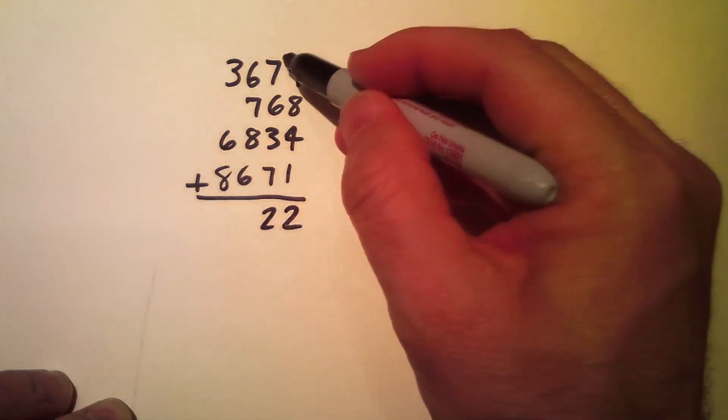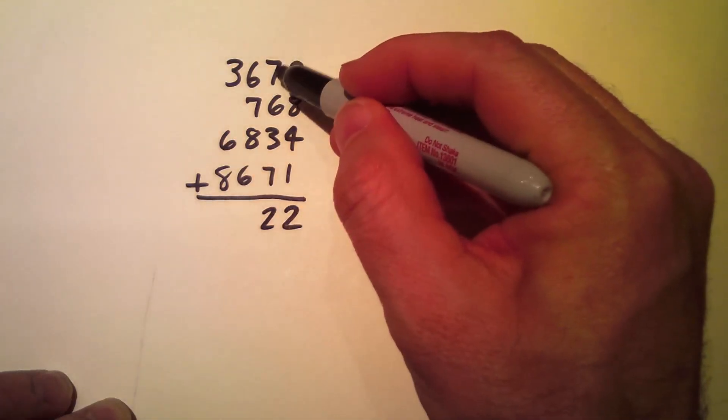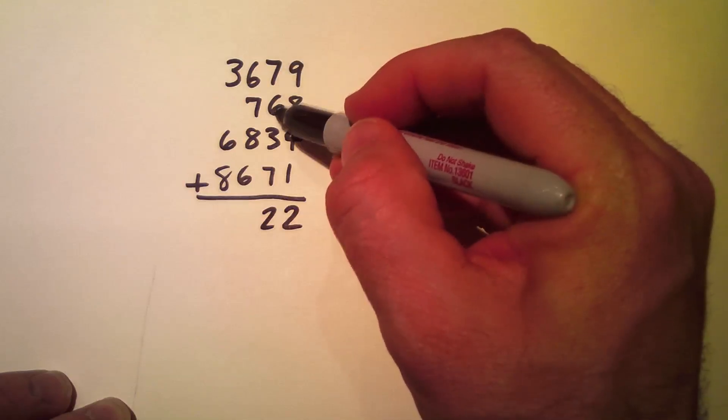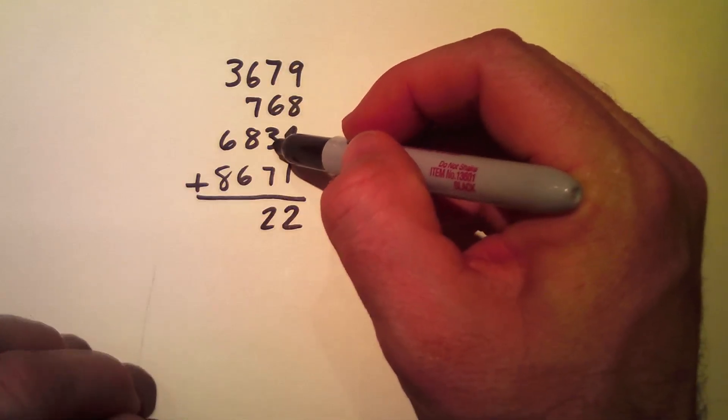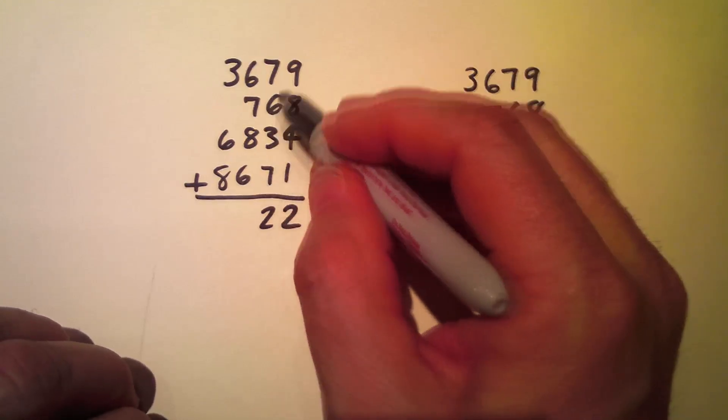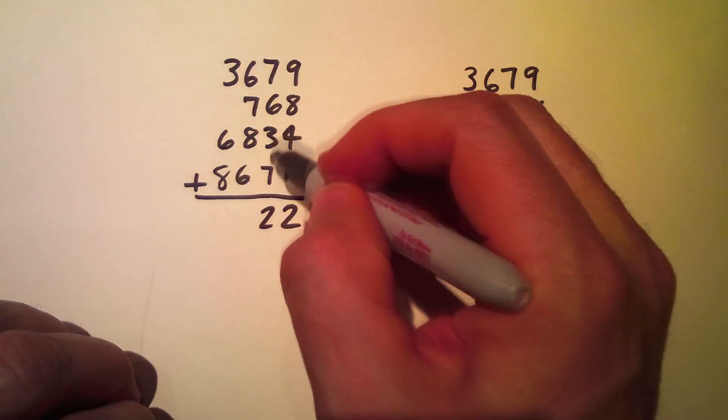Now I'm going to add the tens. 70 and 60 is 130, plus 30 is 160, plus 70 is 230.